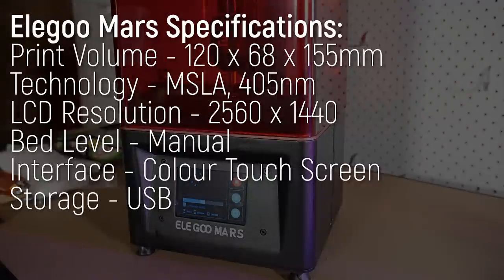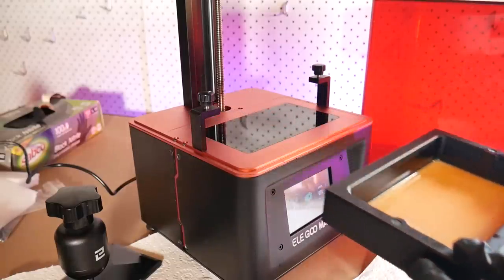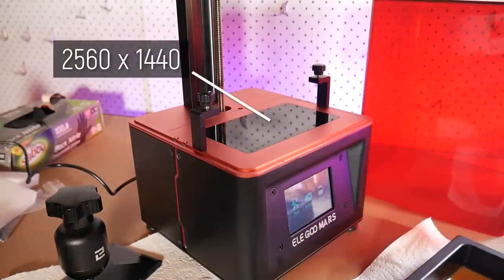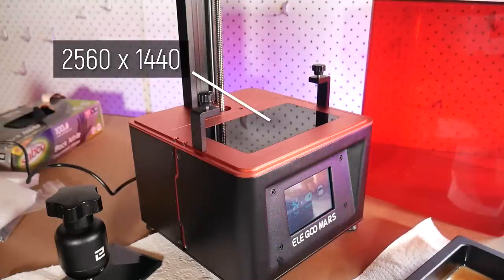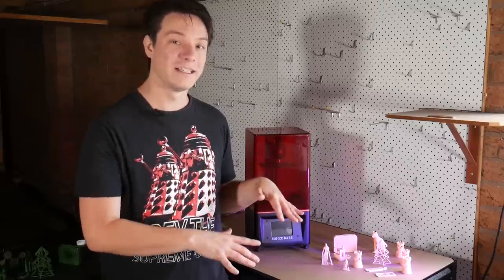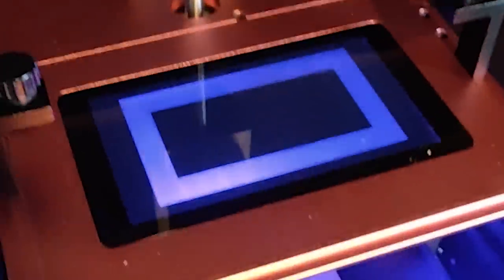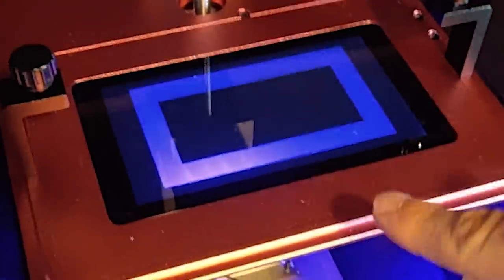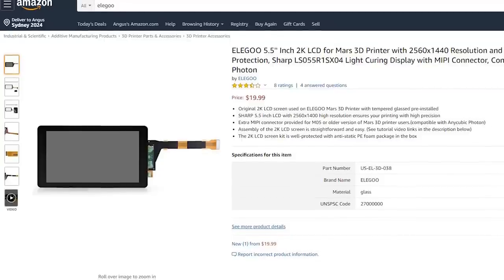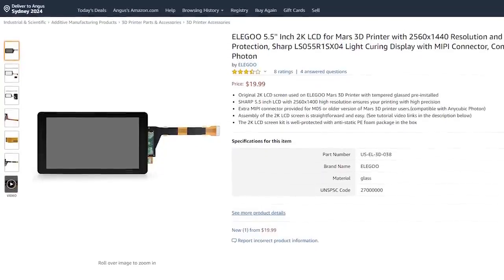The Mars has a print volume of 120 by 68 by 155 millimeters, which is small indeed, but the magic of these machines is the incredible detail they're capable of reproducing thanks to the 2560 by 1440 pixel LCD mask which effectively sets the resolution in the XY plane. This LCD is considered a consumable and is easily damaged. Heat can kill it over time, but a new one is only 20 bucks and the replacement procedure is well documented.